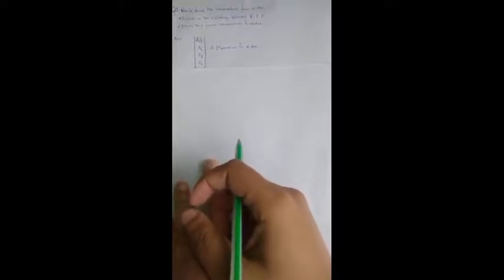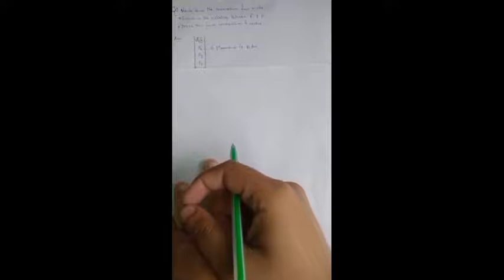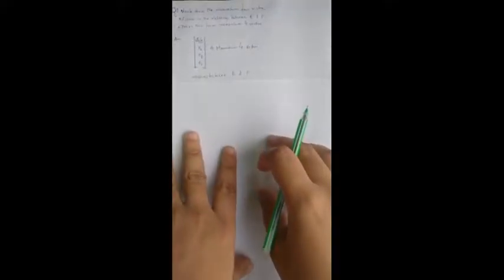So, it is called the 4-vector and the first component of it is given by iE by c where c is the velocity of light in the vacuum and the other components are actually the momentum vector components in x, y and z direction respectively.